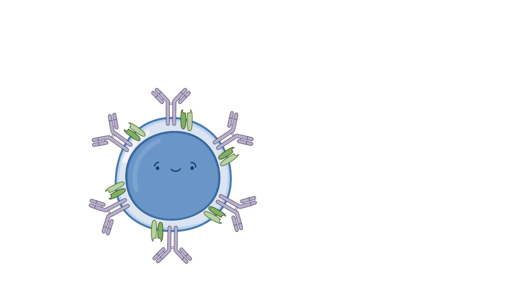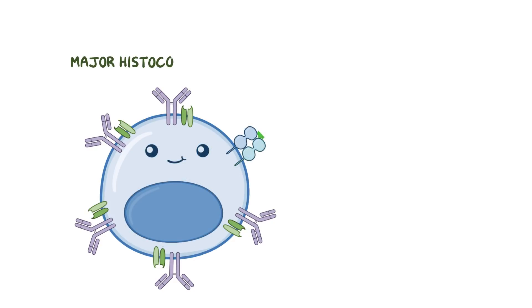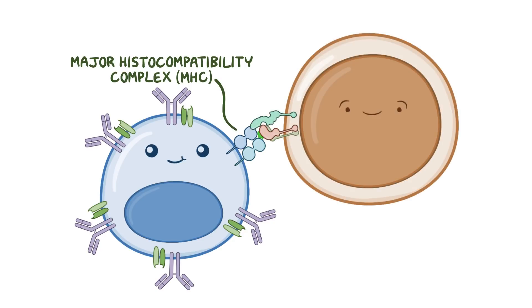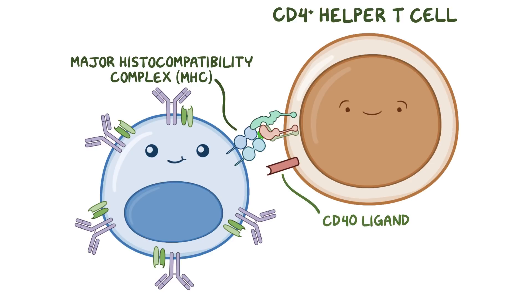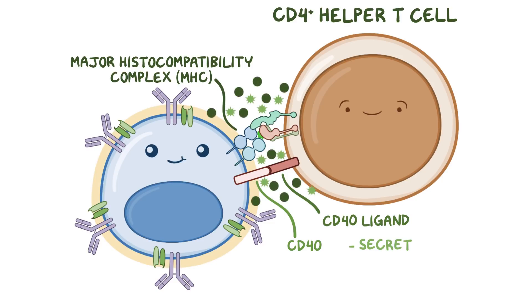Each B cell has over 100,000 B-cell receptors spread across its surface, all of which bind the same unique antigen. When a B cell comes in contact with an antigen it recognizes, the B cell internalizes that antigen and then presents a piece of it on a major histocompatibility complex class 2 molecule, or MHC class 2 for short. Then a CD4-positive helper T cell binds to the presented antigen, and when that happens it expresses a protein called CD40 ligand on its surface. The CD40 ligand attaches to a receptor on the B cell's surface called CD40. This engagement is the key to activating B cells. Often, the T cell also secretes cytokines like interferon gamma and different interleukins, which direct the B cell with specific instructions as to what class of antibody it should start producing.